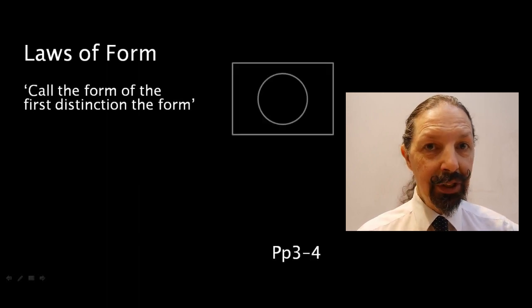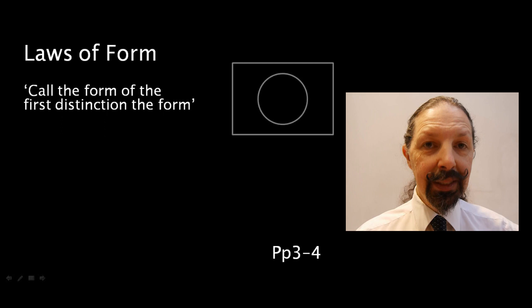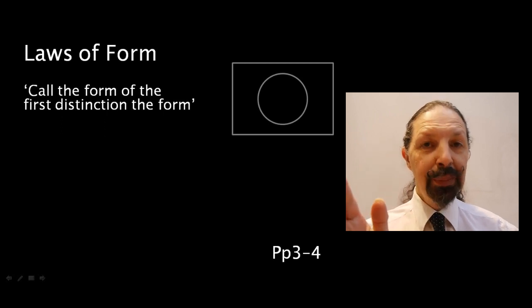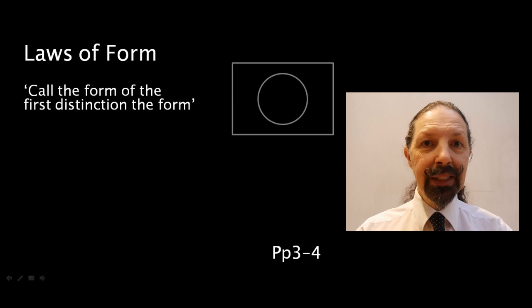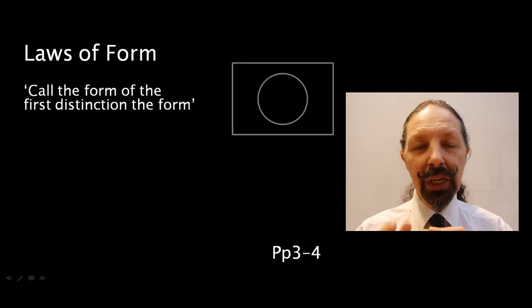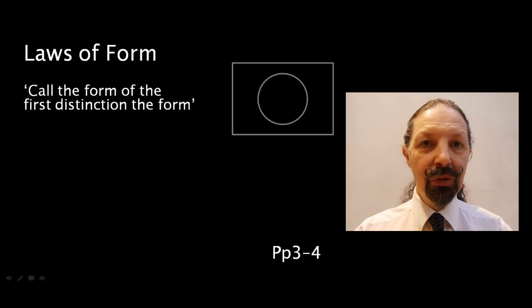Call the form of the first distinction the form. This is an injunction. Spencer Brown writes in a style which has been termed E prime. That is a style of writing which does not use the verb to be at all. That's not strictly true but he does write in injunctions. Just like a recipe book is written.